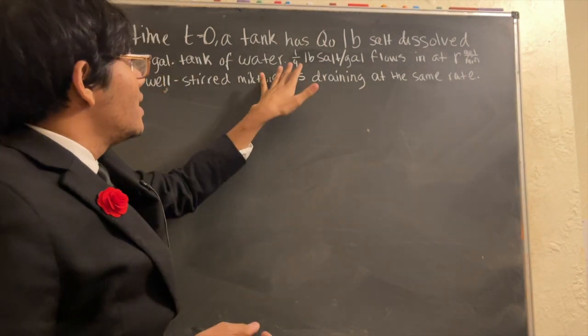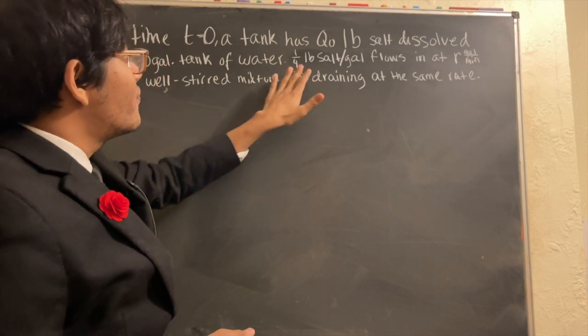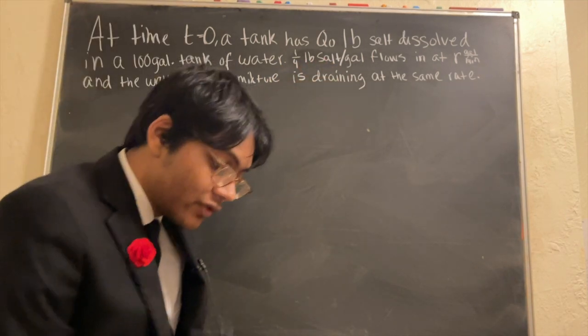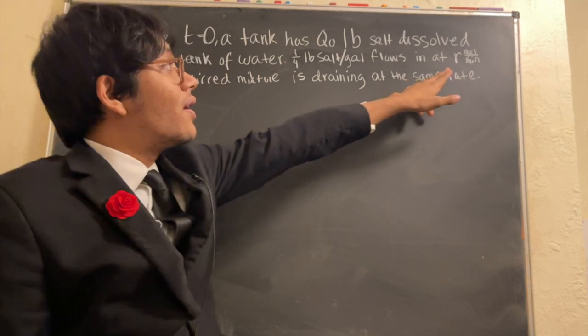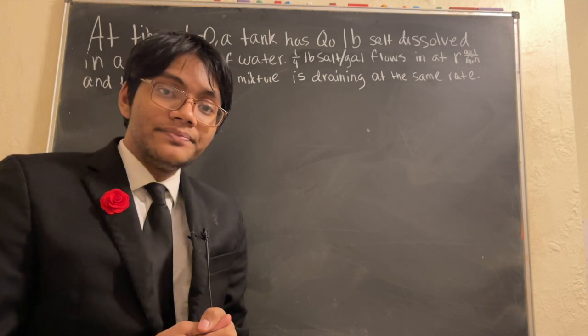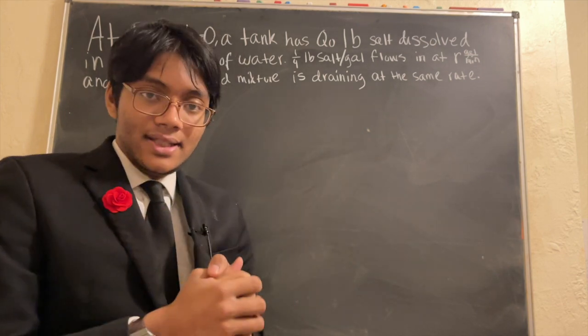This salt is dissolved in a 100 gallon tank of water. Now, we also are told that one-fourth pounds of salt per gallon flows into our water tank at a rate of r gallons per minute. And simultaneously,